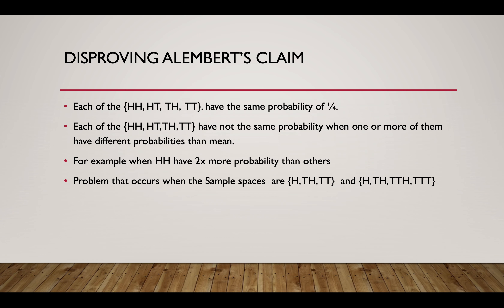So let's disprove d'Alembert's claim. First of all, d'Alembert made a big mistake at the beginning. He was right that in real life we will never get HH or HHH, since we will stop once we get one H. However, when we solve this problem, we agree that each of these samples — HH, HT, TH, and TT — have the same probability of 1 divided by 4, meaning 25%.